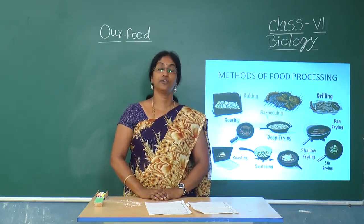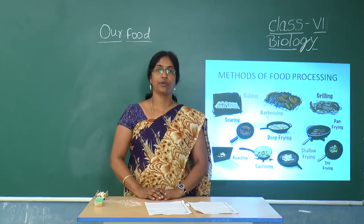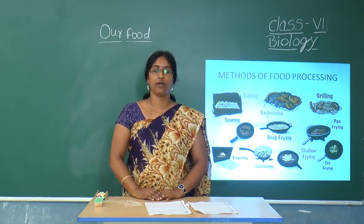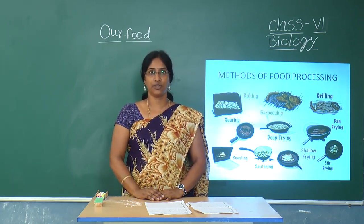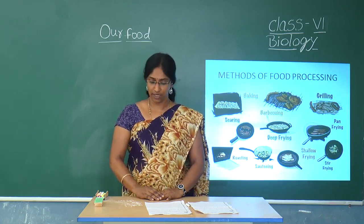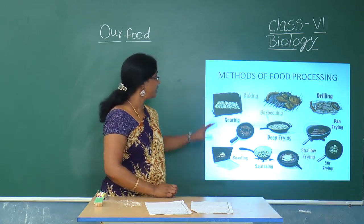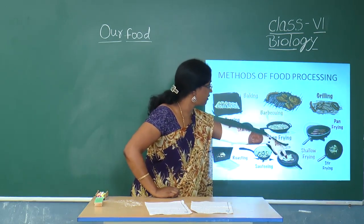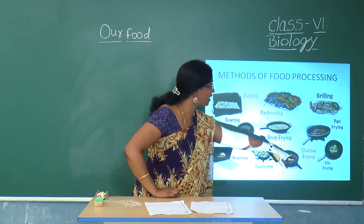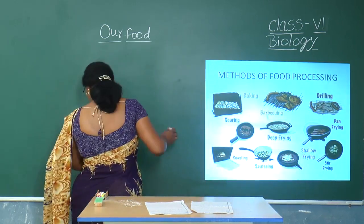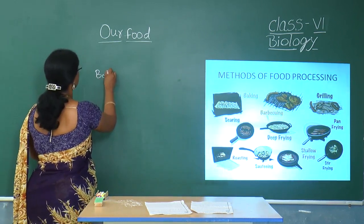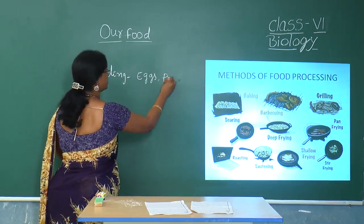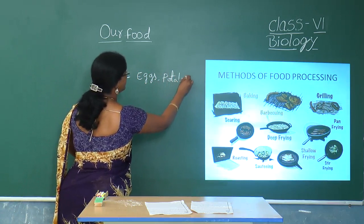Sometimes you say the food is too delicious or too tasty — how does food get its taste? Taste depends on the method of preparation and the ingredients used. Here we can find many methods of preparation. You can observe baking, searing, barbecuing, grilling, and different types of frying methods like shallow frying, stir frying, and pan frying. Other than this, we can find boiling — eggs and potatoes are examples of boiling.